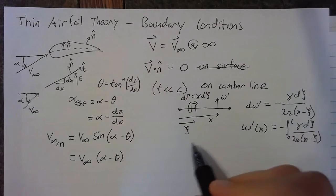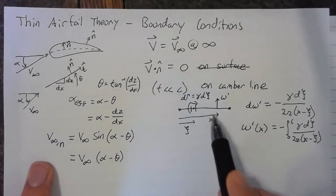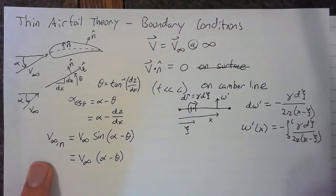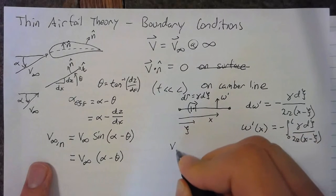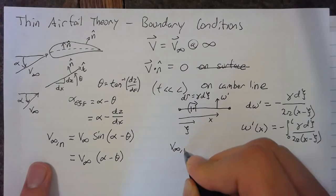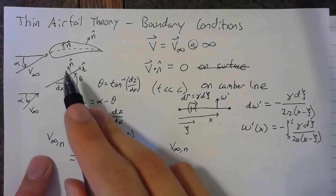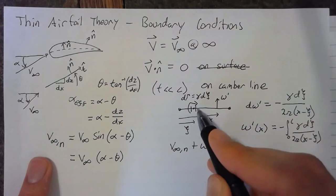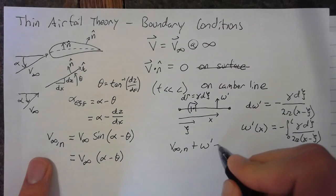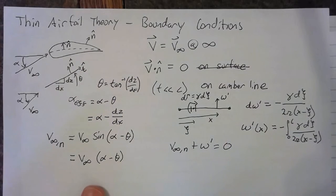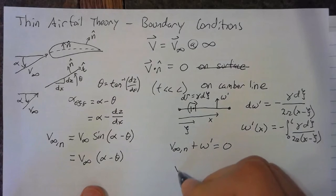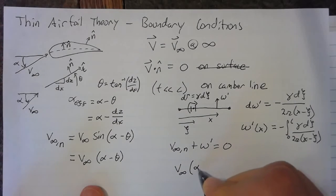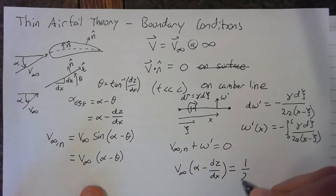So, now we need to enforce this condition based on all of these components. We want to set the sum of our inflow effect and our upwash due to the circulation of the plate equal to zero. Now, summing all this up, this becomes V infinity times alpha minus dz by dx is equal to 1 over 2 pi times the integral.